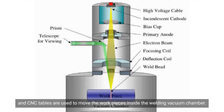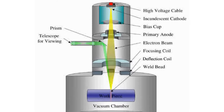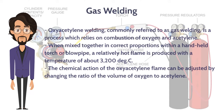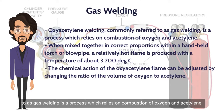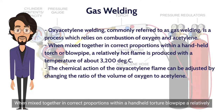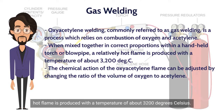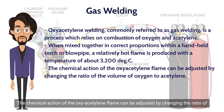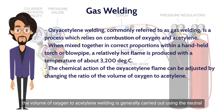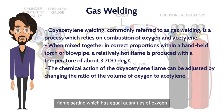Gas welding is a process which relies on combustion of oxygen and acetylene. When mixed together in correct proportions within a handheld torch or blowpipe, a relatively hot flame is produced with a temperature of about 3,200 degrees Celsius. The chemical action of the oxyacetylene flame can be adjusted by changing the ratio of the volume of oxygen to acetylene. Welding is generally carried out using the neutral flame setting, which has equal quantities of oxygen and acetylene.